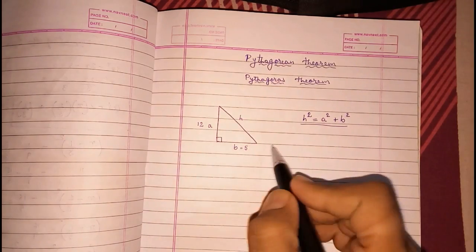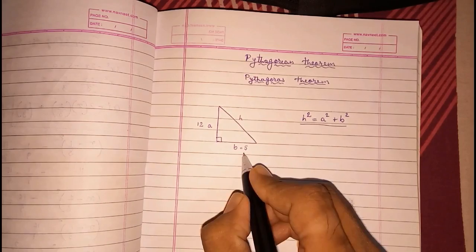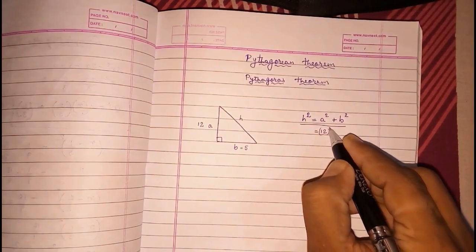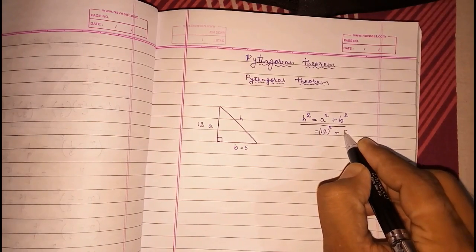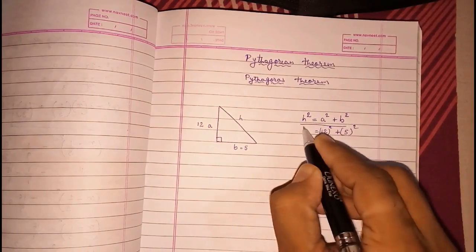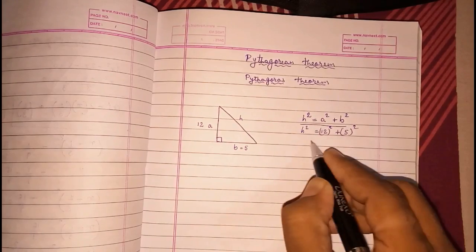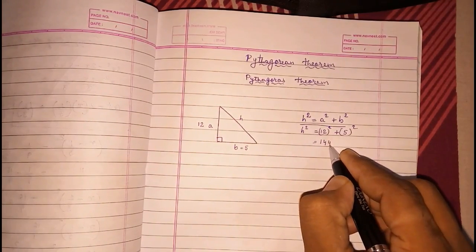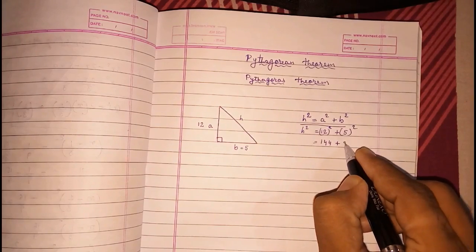I am going to explain. First look here. Now these two sides are—in place of A we are having 12, in place of B we are having 5. We can find H square with the help of these two. Now, square of 12 is 144, square of 5 is 25.